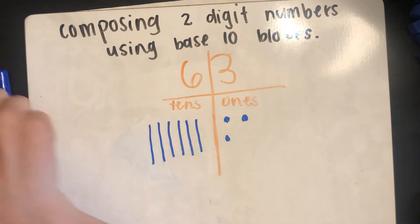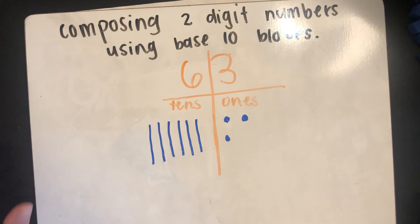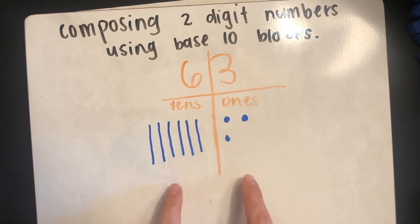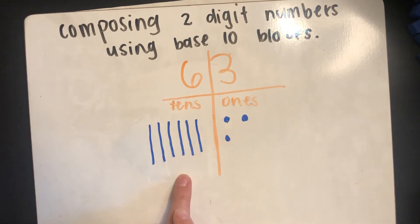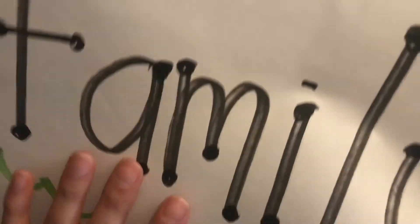Now I want you to pause this video, go get a piece of paper and a pencil, and we are going to be drawing our 10 sticks and ones cubes to build numbers. You can use any piece of paper — it doesn't have to be lined. You could even use the backside. Use whatever you have at home.